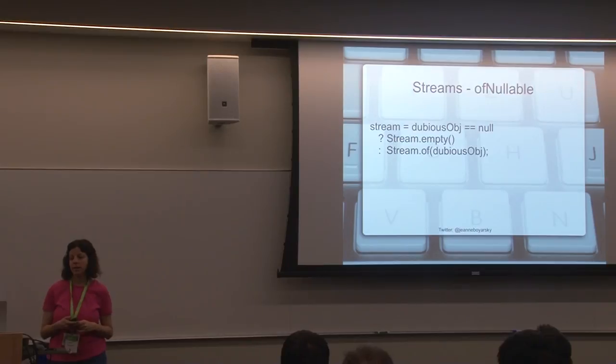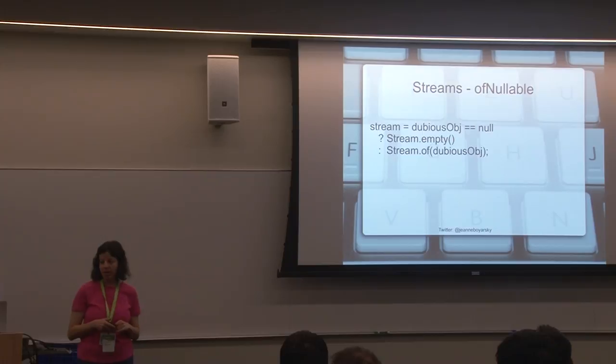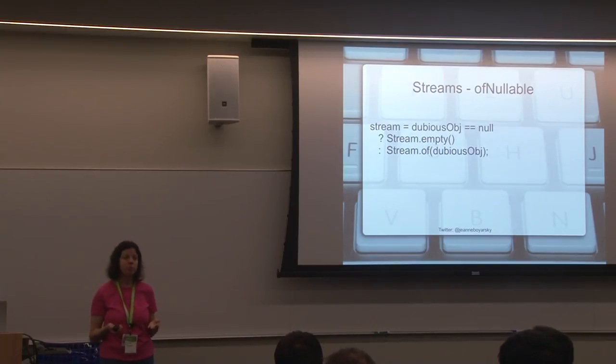The fourth stream method is of nullable. Of nullable is fun. Right now in Java 8, if you're creating a stream with one object in it, you have to be careful that that object isn't null. If you're not careful, it throws a null pointer, which means you have code that looks a lot like this. You get a dubious object back from an API. You curse the developers of that API for returning null, and then you have a null check where you say, if it was null, I want an empty stream, and if it's not null, I want to create a stream that consists of that object. This works. It's just a lot of code.